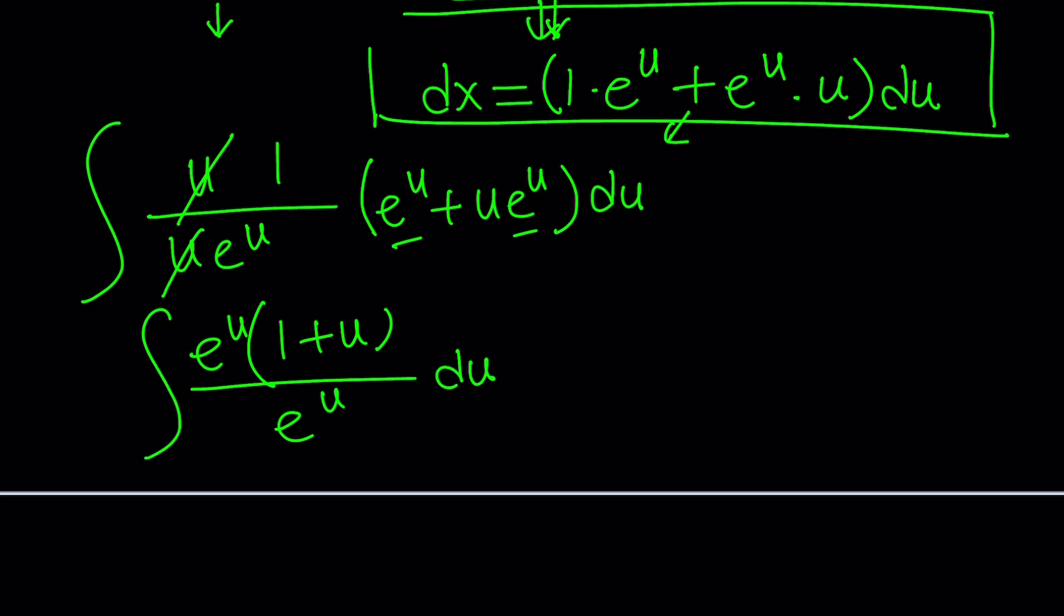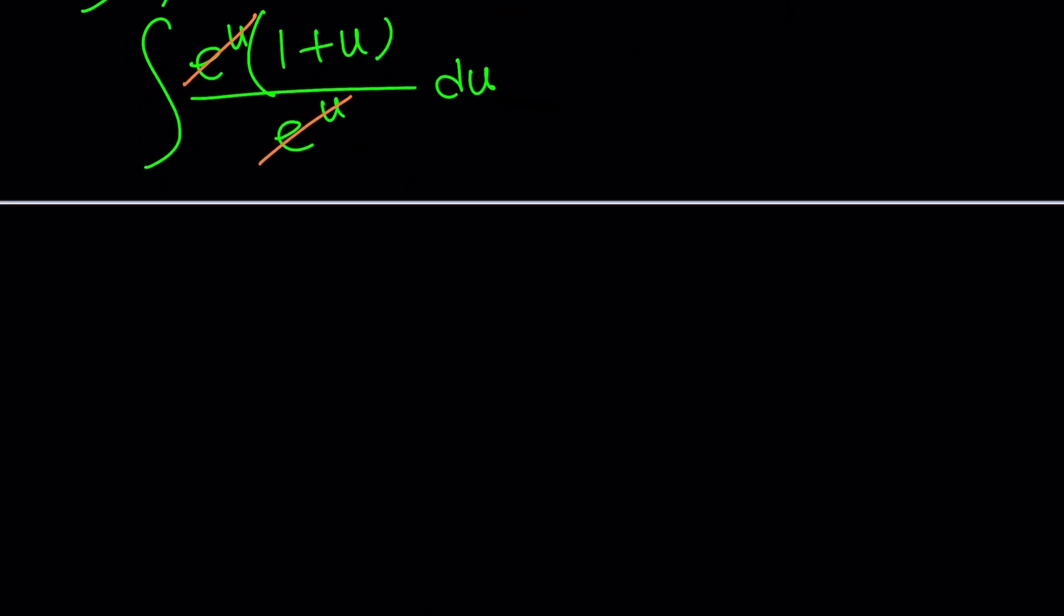This is awesome, isn't it? e to the u cancels out, and we end up with something super simple. How do you integrate 1 plus u? That's so easy. Of course, you're integrating with respect to u.